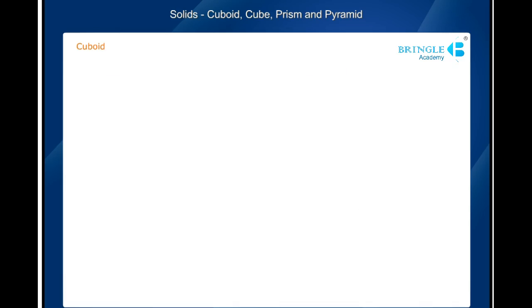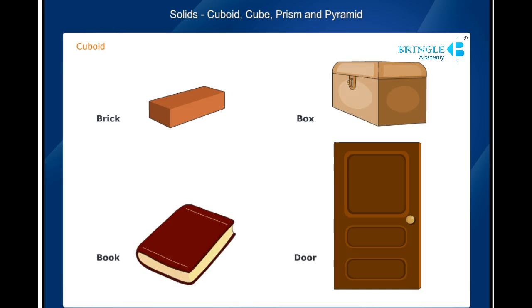In our daily life, we come across different objects like a brick, a box, a book, and a door. These objects have length, breadth, and height and are physical examples of a geometric figure called a cuboid.